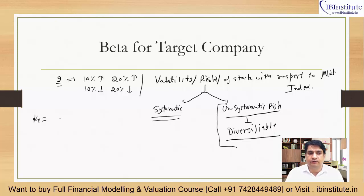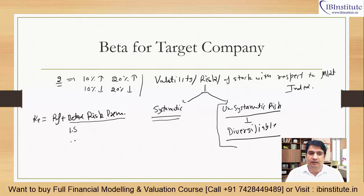You will get the cost of equity, which is the risk-free rate plus beta into risk premium. If your beta is more than 1, then your cost of equity portion will increase. If your beta is less than 1, your cost of equity will be lower.